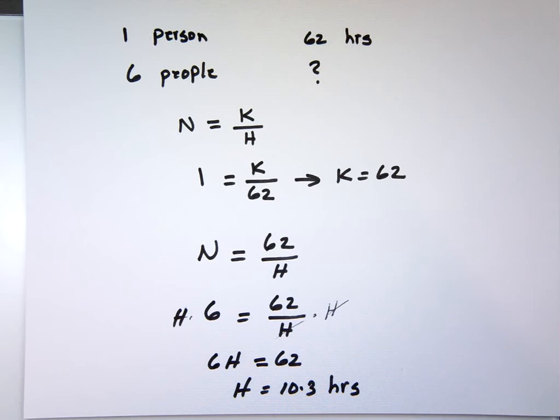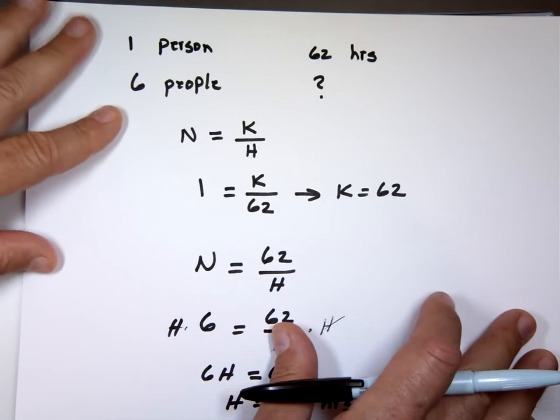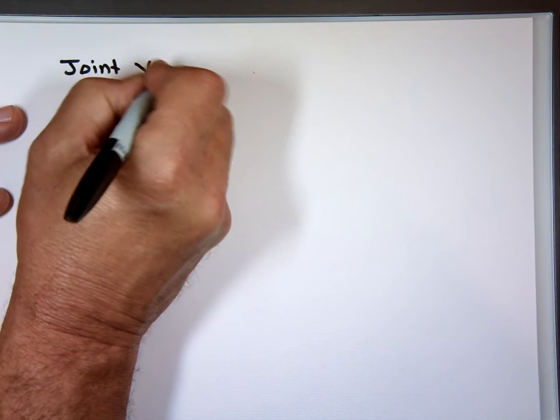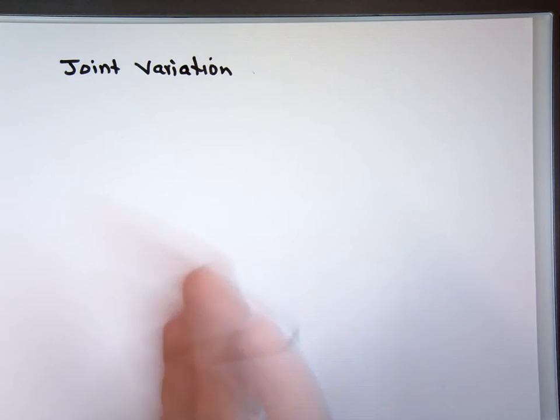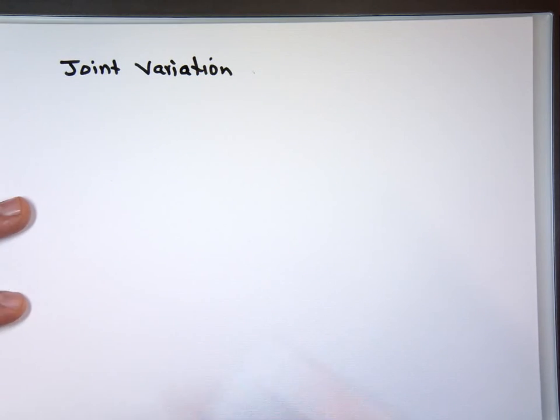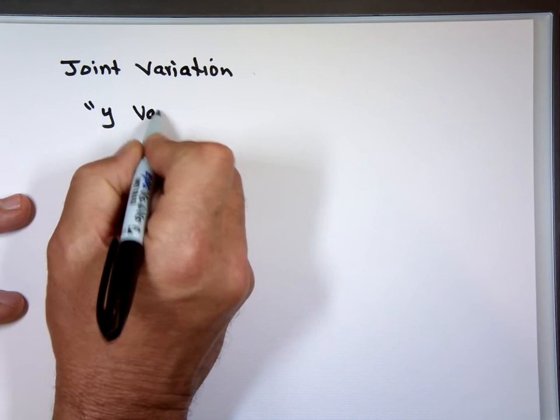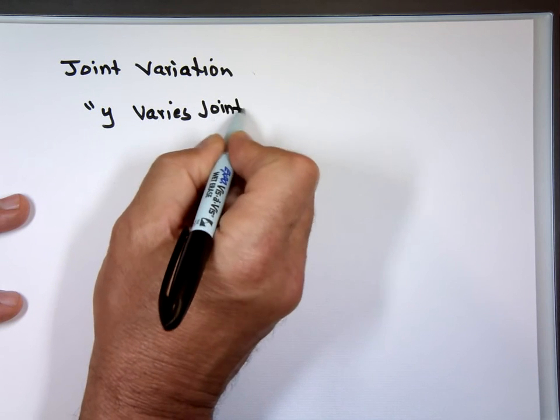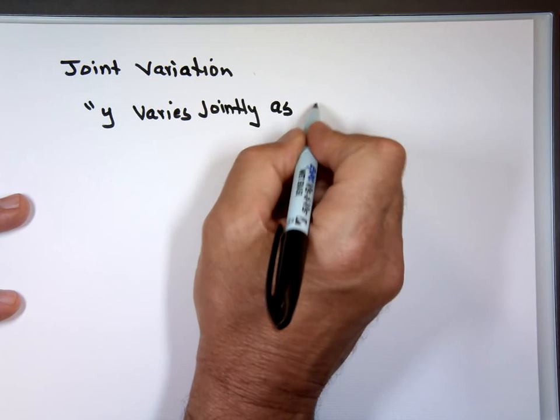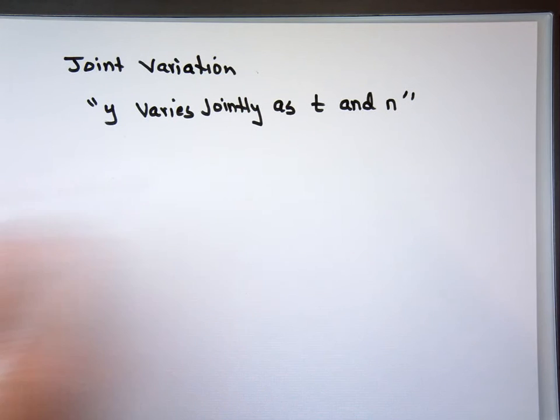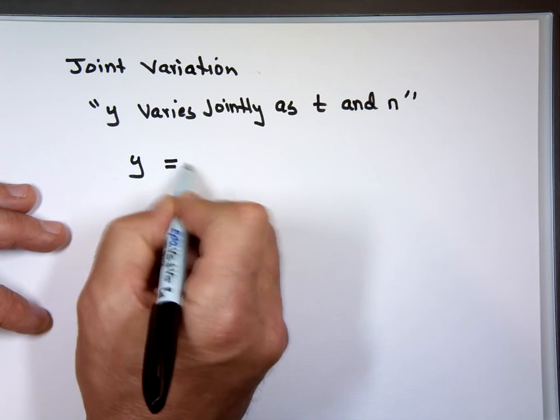What about joint variation? That means you have more than one thing. Joint variation. It might be two or three factors affecting the result. So I might write to you, I might say Y varies jointly as T and N. Notice it didn't say direct, it didn't say inverse. That means direct variation. It depends on two things. Y equals K times T times N.